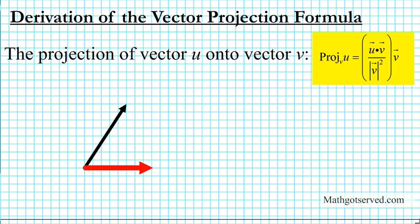Hello students, and welcome to the derivation of the vector projection formula. It basically says that the projection of vector u onto vector v is given by this formula here. If you look at this expression, this is a scalar quantity being multiplied by a vector.